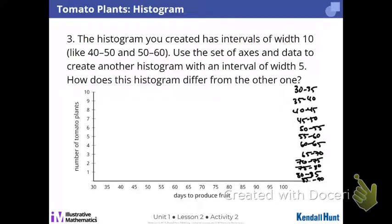So 30 to 35, how many? Zero. 35 to 40, zero. 40 to 45, zero. 45 to 50, one. 50 to 55 would be 52 and 53, so two. 55 to 60, three. 60 to 65, four. 65 to 70, five. 70 to 75, three. 75 to 80, six. 80 to 85, three. 85 to 90, one. And I need a 90 to 95, one.